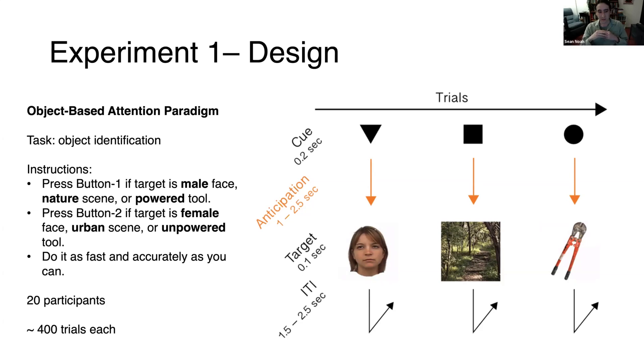Within each object category there were two subcategories. Within faces we had images of male and female faces. Within scenes we had natural scenes and urban scenes. Within tools we had images of power tools—things like power drills, trucks, or cranes—and non-powered tools like a wrench, pliers, screwdriver, or broom. The task that our participants had to perform was to discriminate the subcategory—to press one button if the target image belonged to one subcategory and a different button if it belonged to the other.